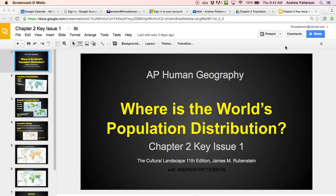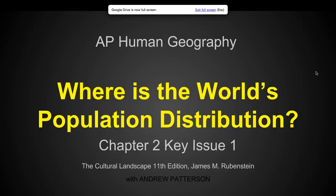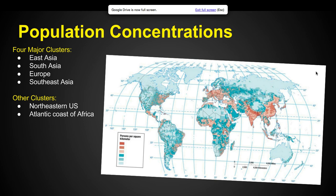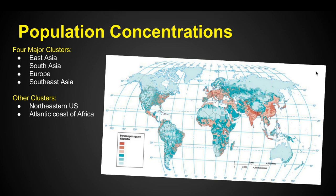Hello and welcome to AP Human Geography Chapter 2 Key Issue 1: Where is the World's Population Distributed. We're looking at where people are on the earth, and we've got major population clusters — four areas where you see tons of people.